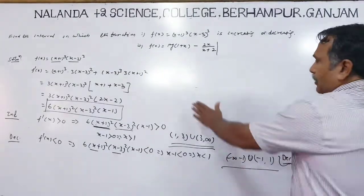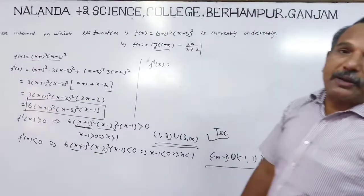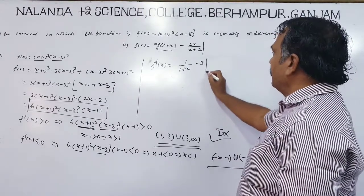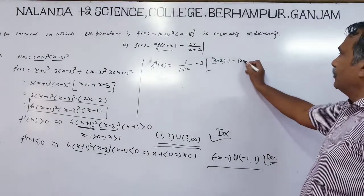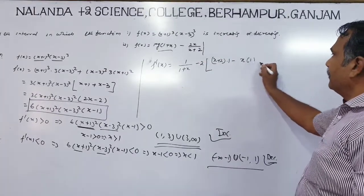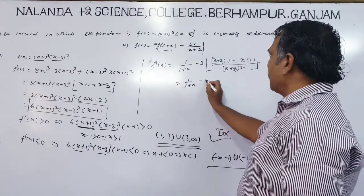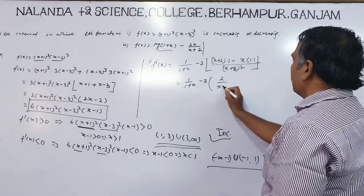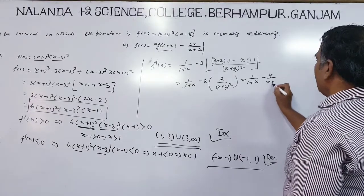Now the second example: f(x) is given. Find f'(x). The derivative of log(1+x) is 1/(1+x). Using the quotient rule for u/v: f'(x) equals [v·(derivative of u) minus u·(derivative of v)] divided by v². After substituting, we get 1/(1+x) minus 2/(x+2)².